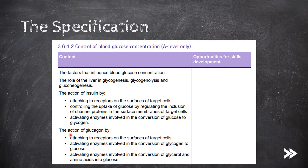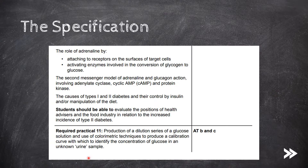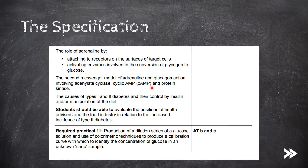We also need to know the action of glucagon by attaching to receptors on the surfaces of target cells, activating enzymes involved in the conversion of glycogen to glucose, as well as activating enzymes involved in the conversion of glycerol and amino acids into glucose. We should also know the role of adrenaline by attaching to receptors on the surfaces of target cells and activating enzymes involved in the conversion of glycogen to glucose. We also need to know the second messenger model of adrenaline and glucagon action involving adenylate cyclase, cyclic AMP (cAMP), and protein kinase. Finally, we should know the causes of type 1 and type 2 diabetes and their control by insulin and/or manipulation of the diet.